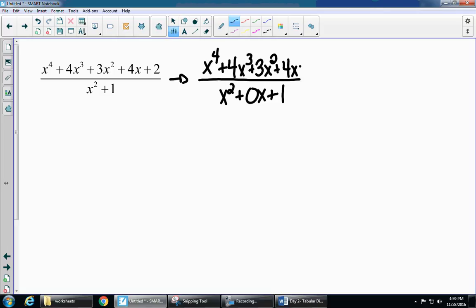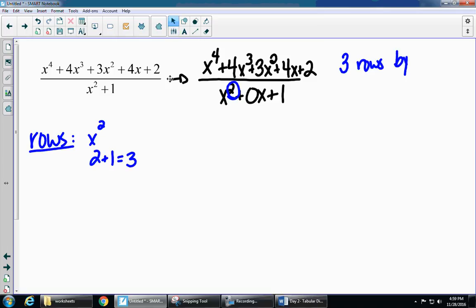So now, if I'm going to be using the tabular method, that means I need to decide how many rows and how many columns. So for your rows, you're going to take the biggest exponent in your denominator, and I'm going to add 1. So 2 plus 1 gives me 3. So I'm going to have 3 rows.